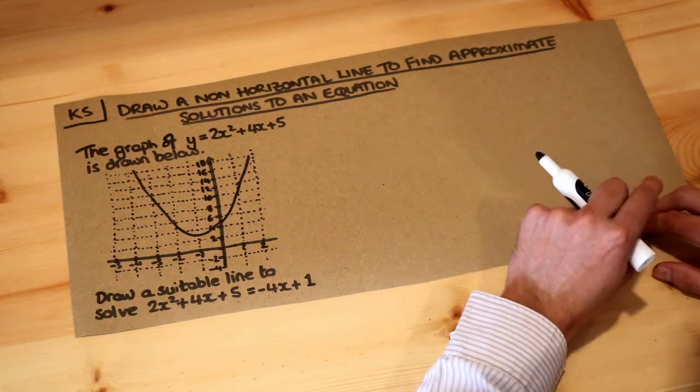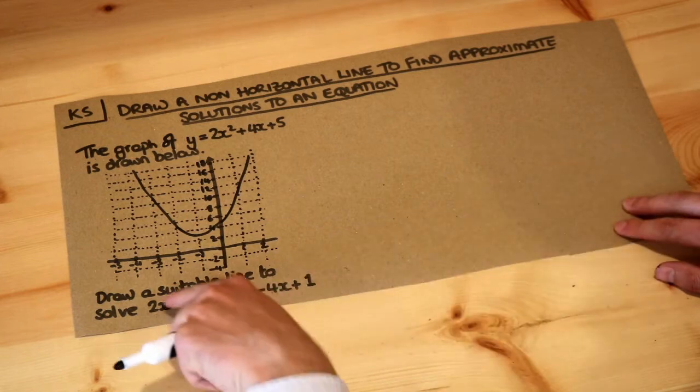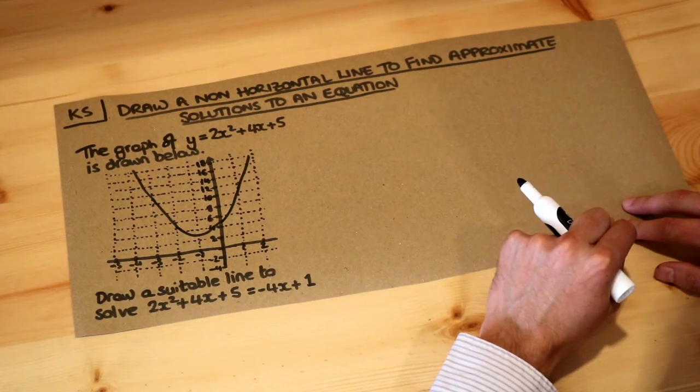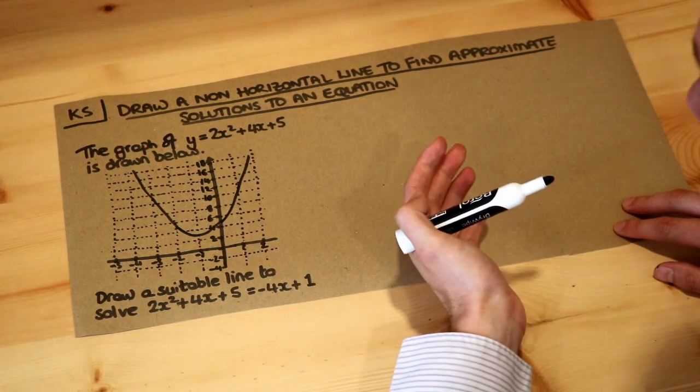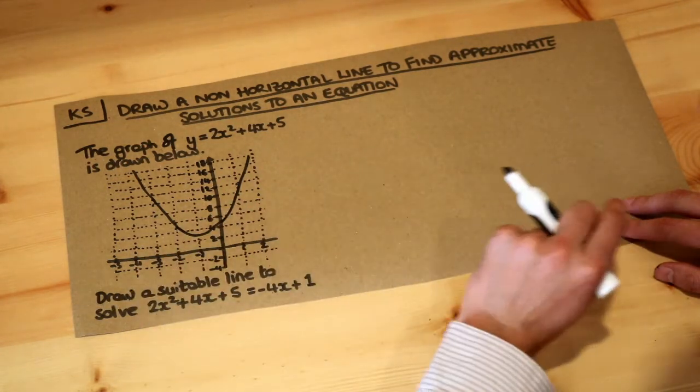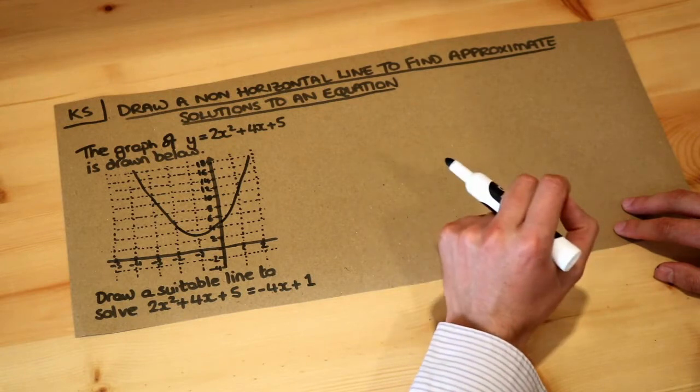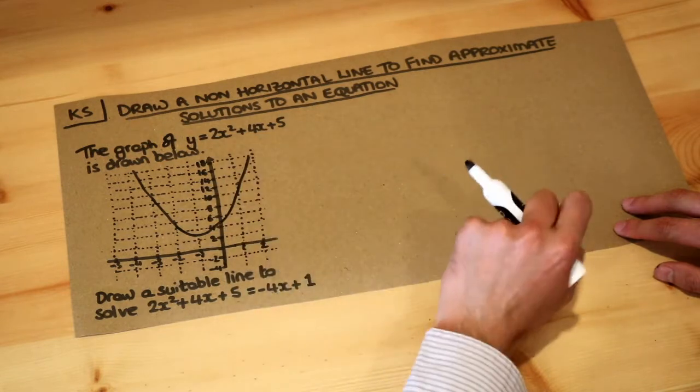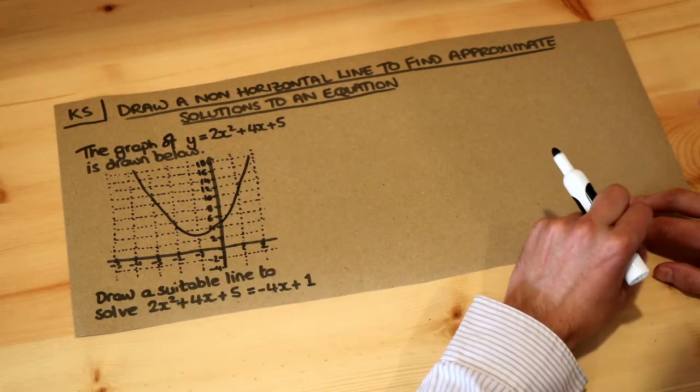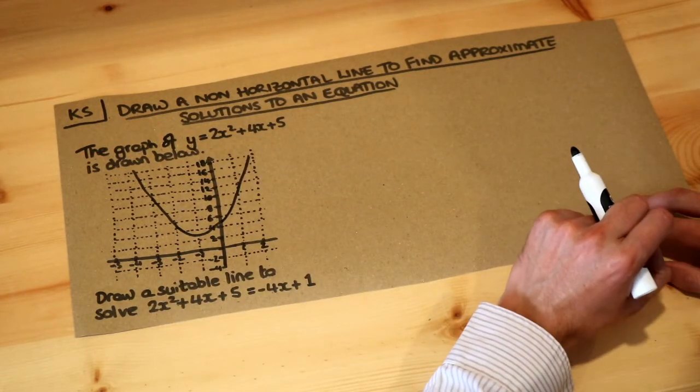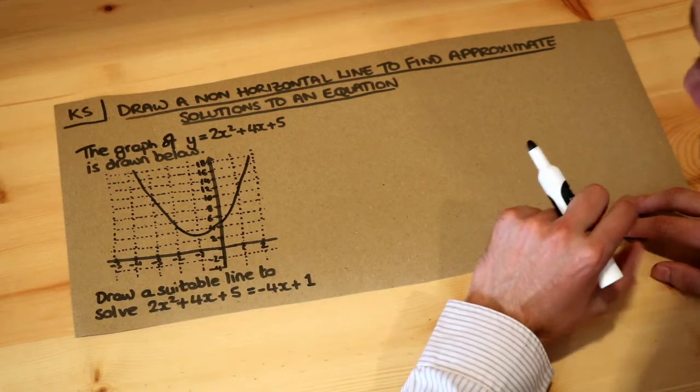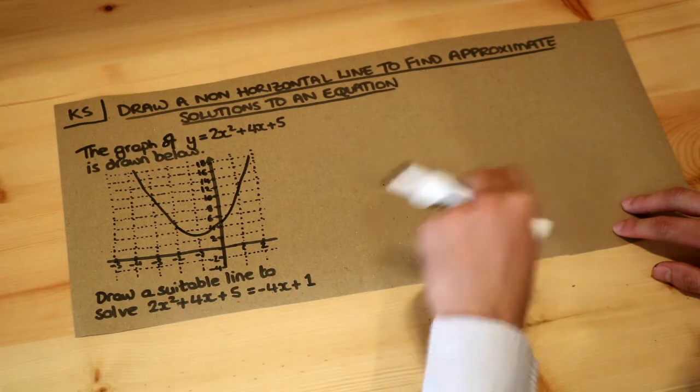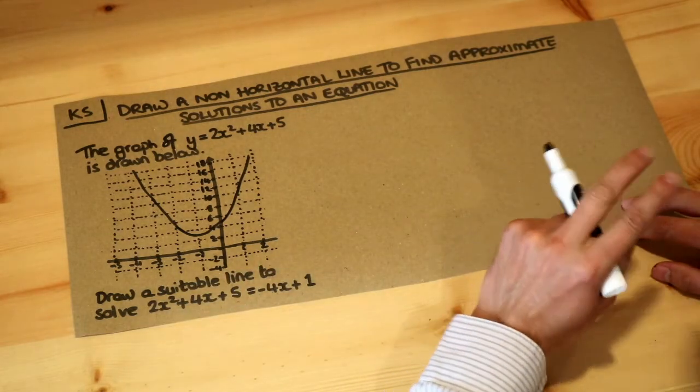In a previous video on this topic, we saw that when trying to solve the equation 2x squared plus 4x plus 5 equals minus 4x plus 1, we could use the quadratic formula to get exact solutions. But we're not using that technique here. We're trying to sketch some graphs and lines to approximate the solution. If the question says you have to draw a suitable line, then you need to use a graphical method and not use the quadratic formula or factorizing.